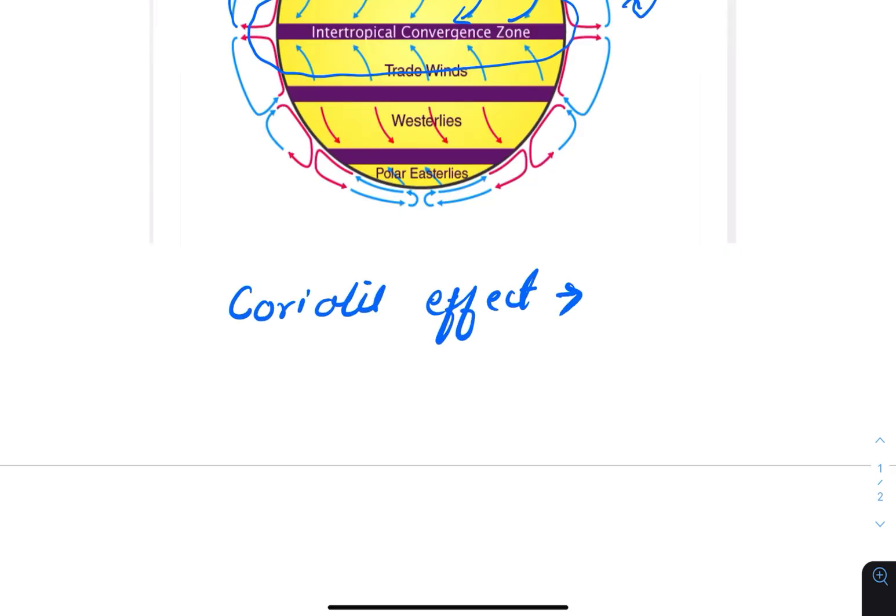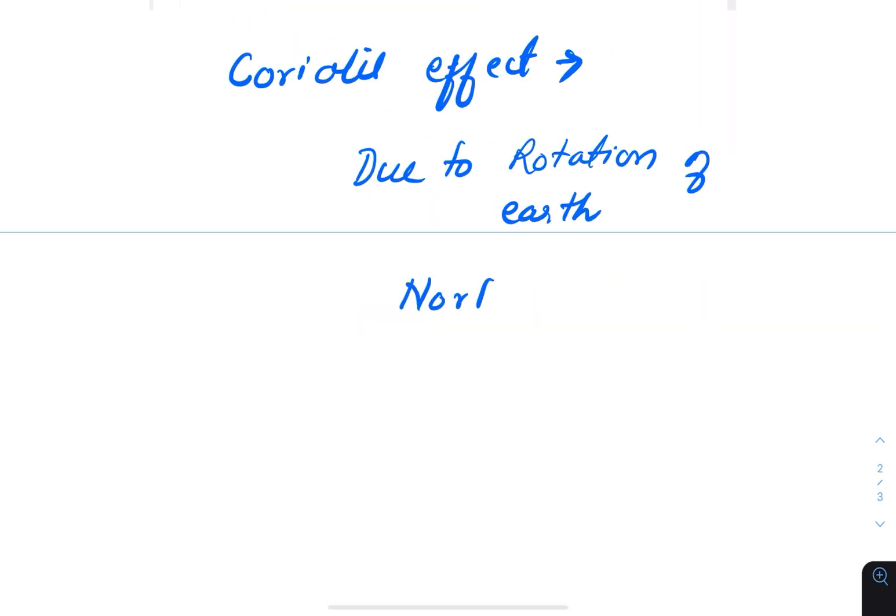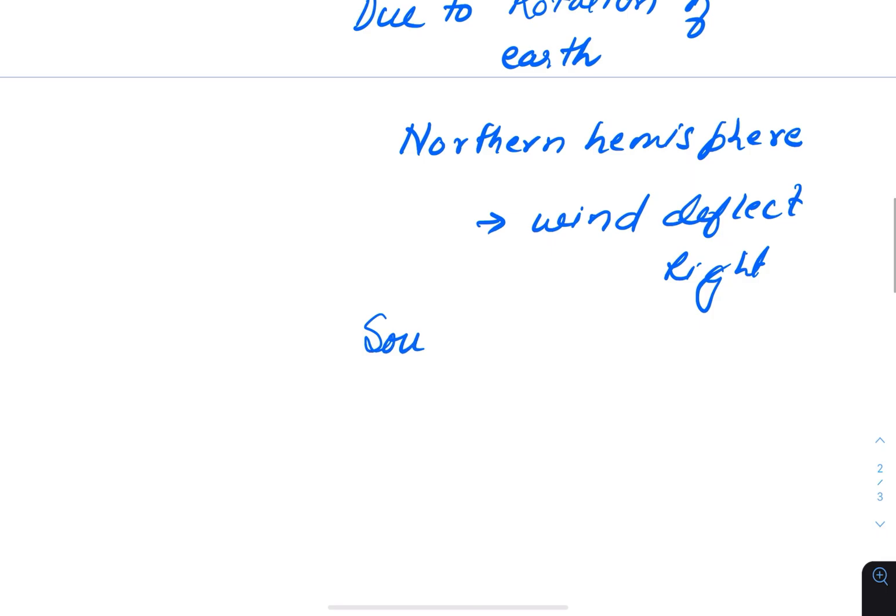These winds are mainly caused by the Coriolis effect. The rotation of the earth on its axis deflects the atmosphere toward the right in the northern hemisphere and toward the left in the southern hemisphere, resulting in curved paths.